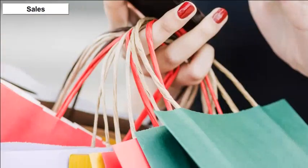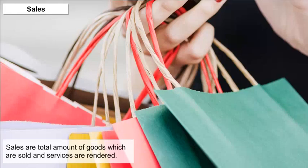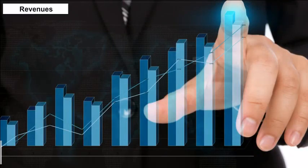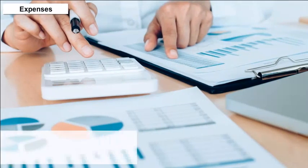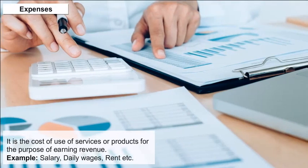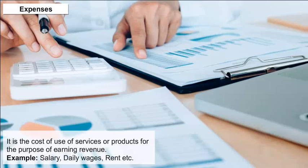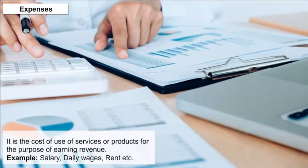Capital is shown on the liability side of the balance sheet. Capital is equal to assets minus liability. Sales: Sales are the total amount of goods which are sold and services rendered. Revenue: Revenue is the amount earned by a business owner after selling its products or services. Expenses: It is the cost of use of services or products for the purpose of earning revenues. Example: Salary, Daily Wages, Rent, etc.